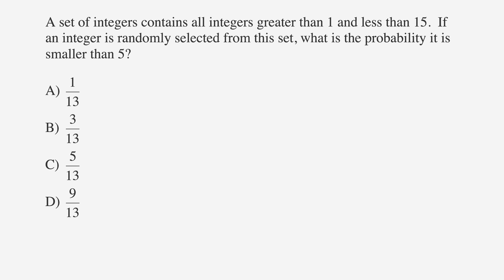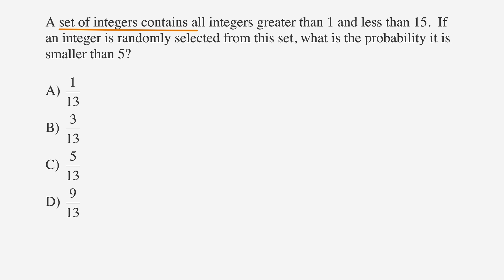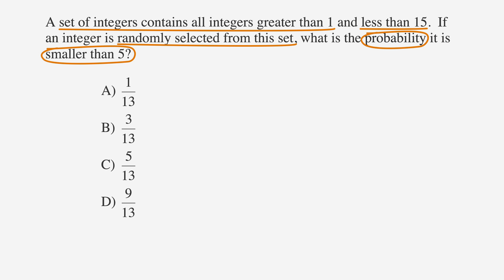Okay, how was that? Let's go through the problem together and see if we get the same answer. So we're being asked for the probability of selecting an integer less than 5, which is great since we just learned the formula for probability. We'll underline the facts, circle the key terms, and label the answer choices, which are possible probabilities.